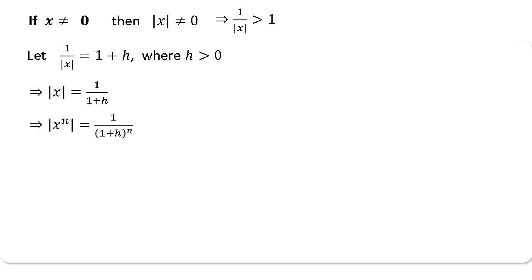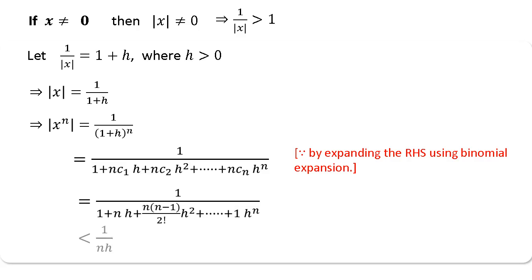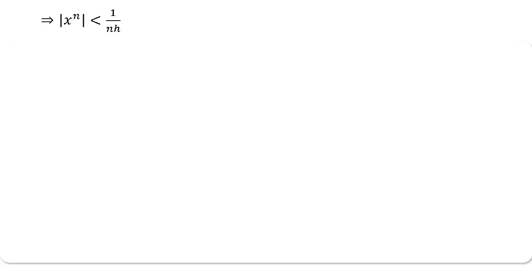From the expansion, you can verify that |x^n| < 1/(nh) for any n. So we have the bound |x^n| < 1/(nh).